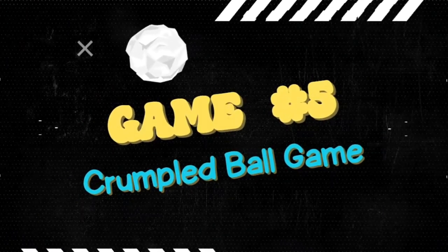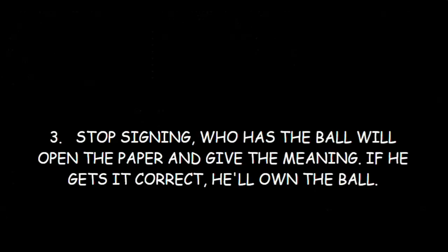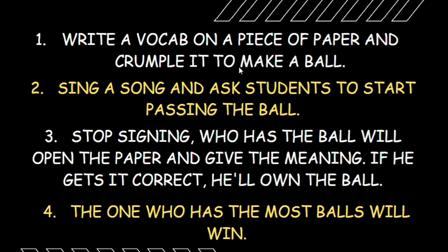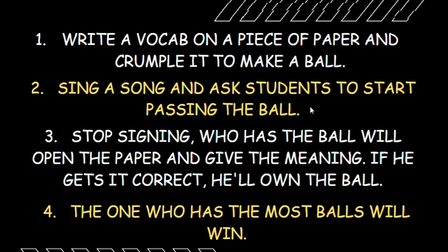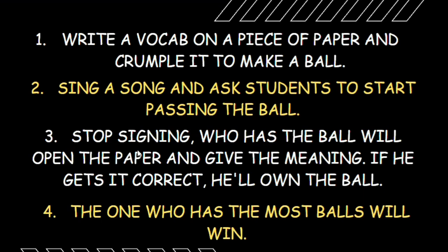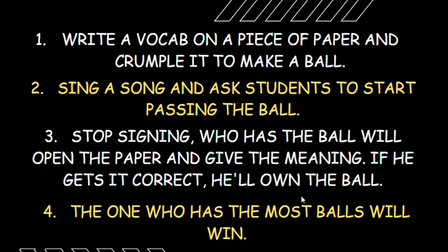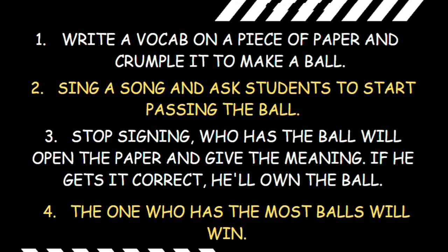Game number five: the Crumpled Ball Game. First, write a vocab word on a piece of paper and crumple it to make a ball. Second, sing a song and ask students to start passing the ball. Third, stop singing — whoever has the ball opens the paper and gives the meaning. If they get it right, they own the ball; if not, they pass it to another. The one who has the most balls wins.